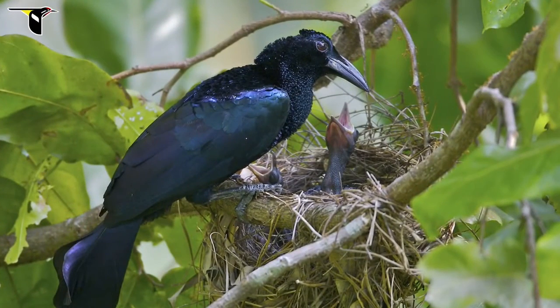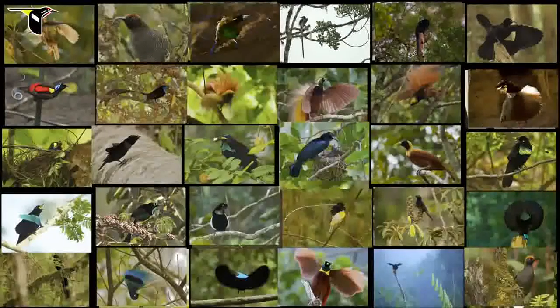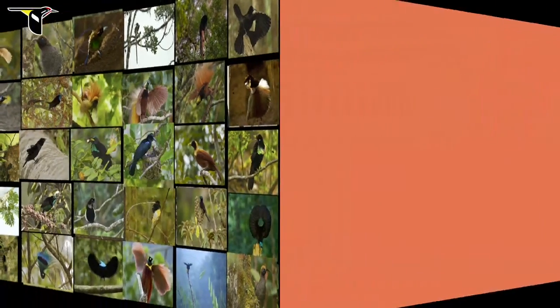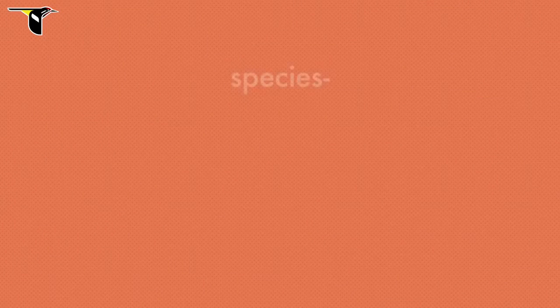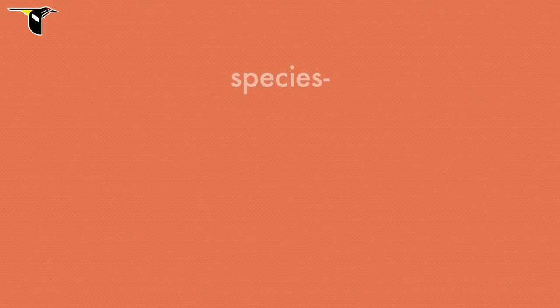And the process that caused this one species to split into many is called speciation. Before we explain speciation, let's talk about what we mean when we use the word species.